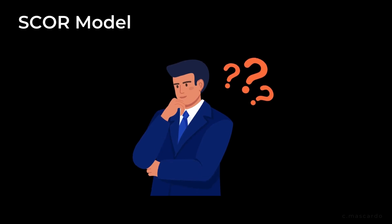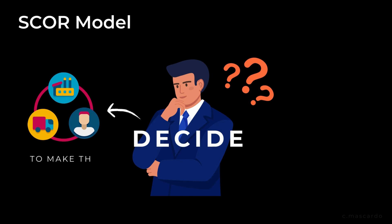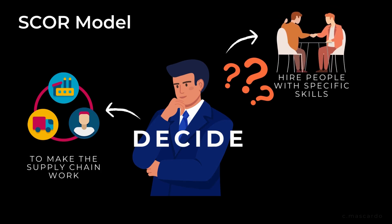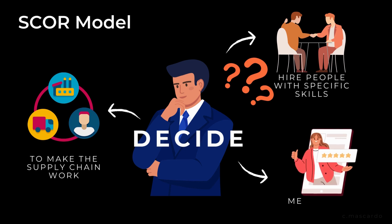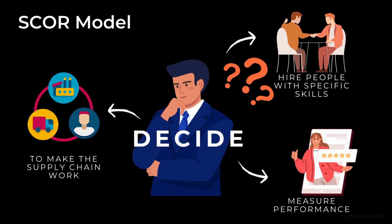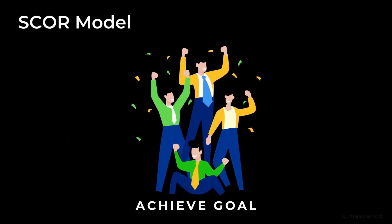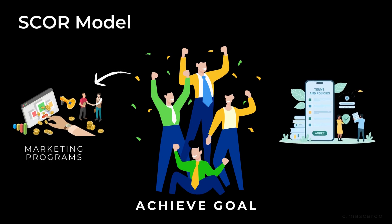In the SCOR model, it is important that you need to decide what else you need in order to make the supply chain work. You may need to hire people with specific skills, which means you need to think about how you will find them and how you will measure their performance. There may also be other processes that you need to have in place for your supply chain to achieve its goals, such as marketing programs or accounting policies.